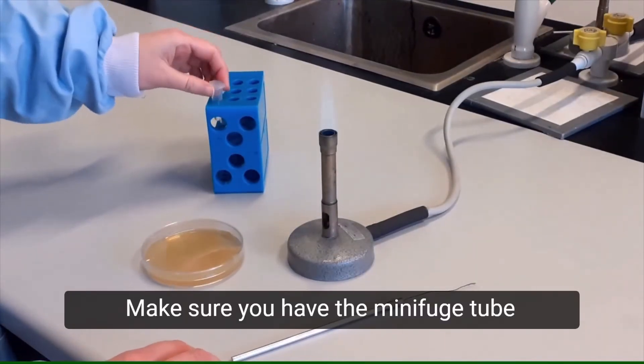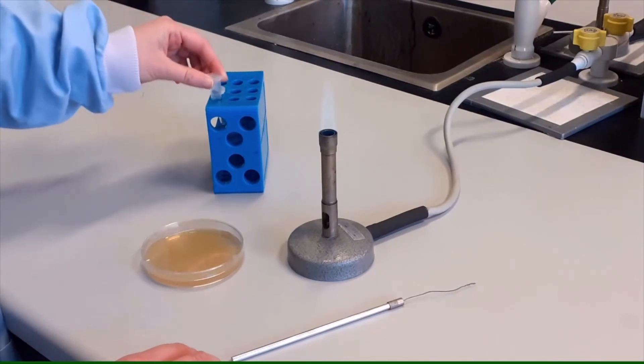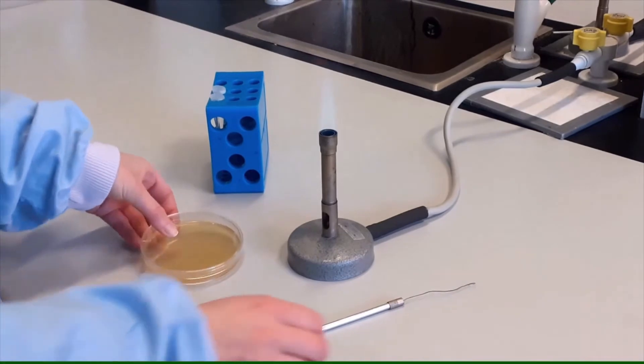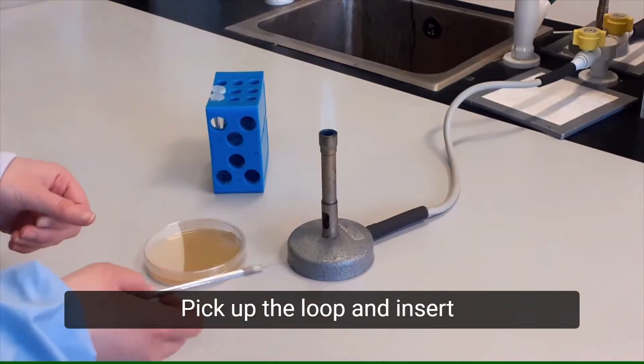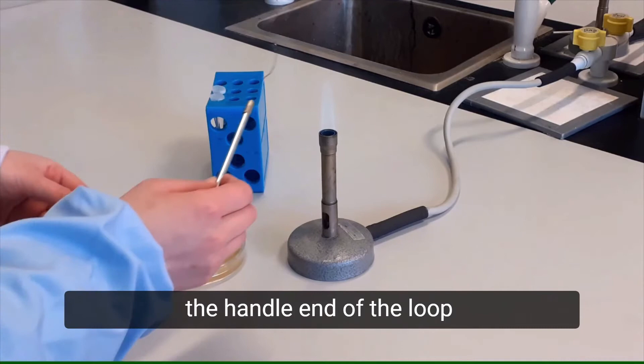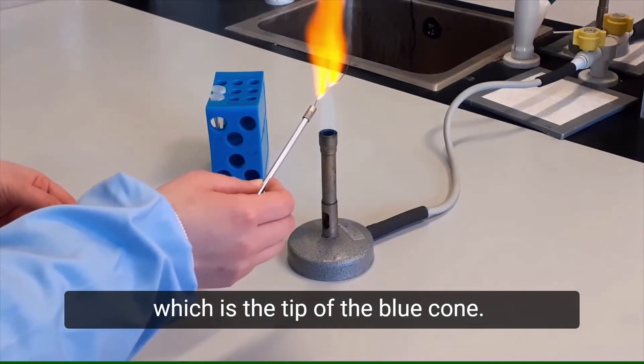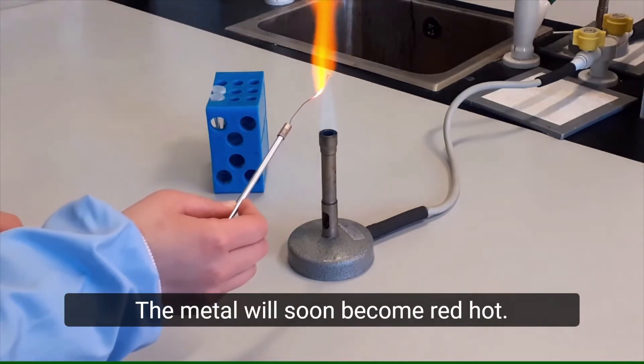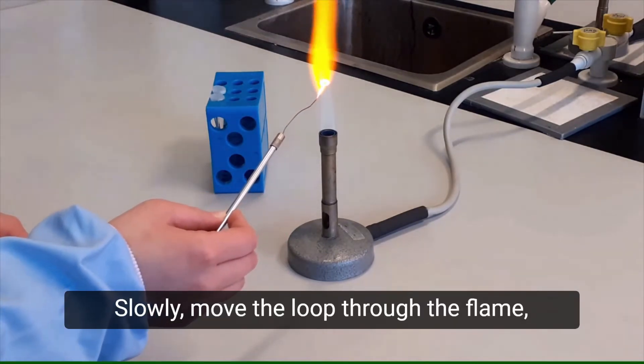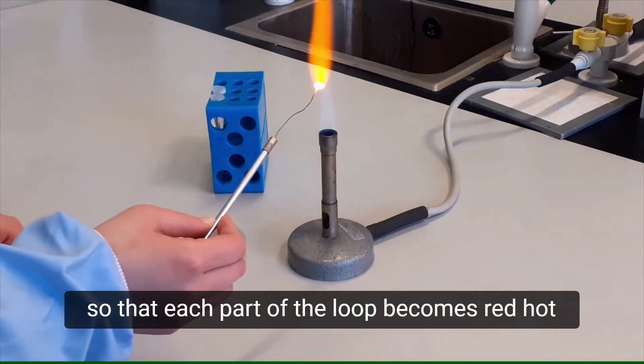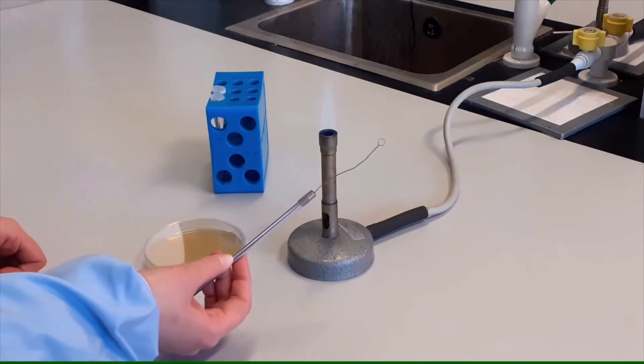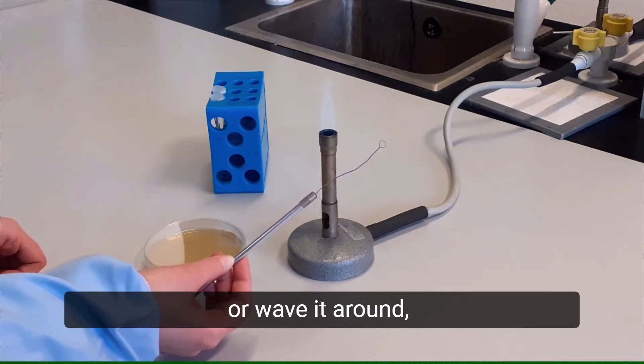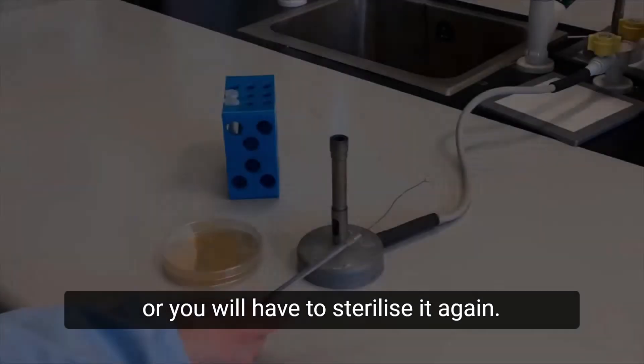Make sure you have the Minifuge tube containing the bacterial suspension, a sterile agar plate, and an inoculation loop. Pick up the loop and insert the handle end of the loop into the hottest part of the flame, which is the tip of the blue cone. The metal will soon become red hot. Slowly move the loop through the flame so that each part of the loop becomes red hot for a few seconds. Now the loop is sterile. Do not place it down on the bench or wave it around, or you will have to sterilize it again.